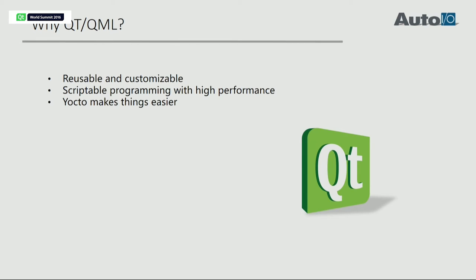Why do we use Qt and QML? The first reason is that QML plugins are very useful and customizable. It is a scripting language, so we can change the UI easily. Thanks to the QML compiler, it gives us very high performance, especially at system boot. And Yocto makes it easy to configure Qt — we can configure Qt for static linking for fast boot, or dynamic linking for the developer and debug environment.